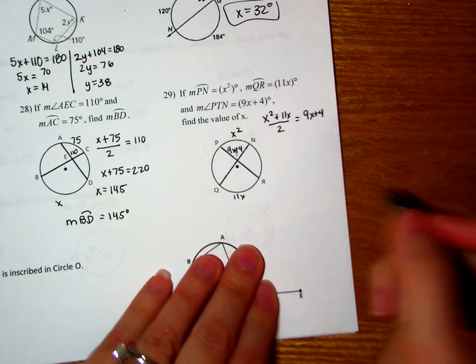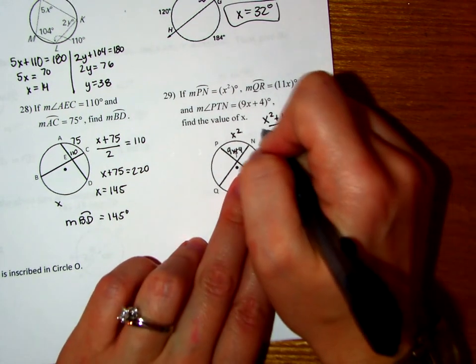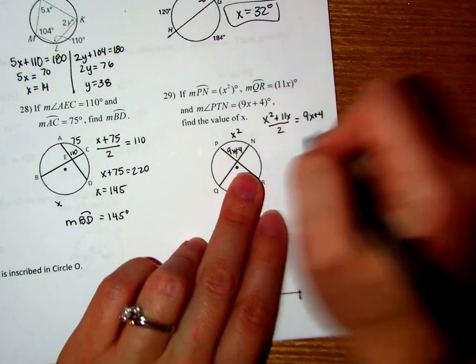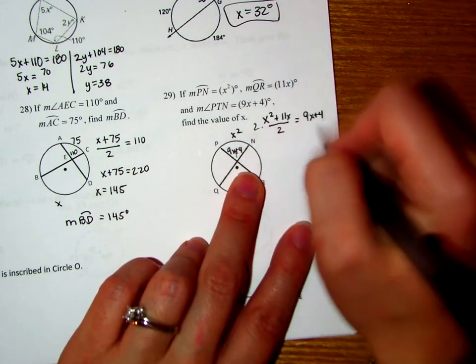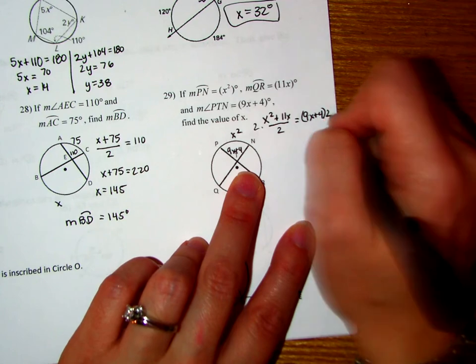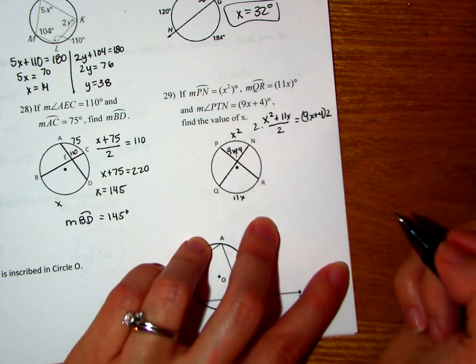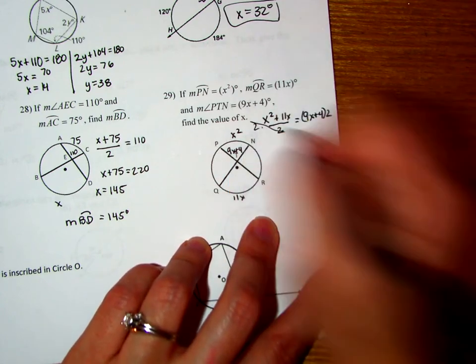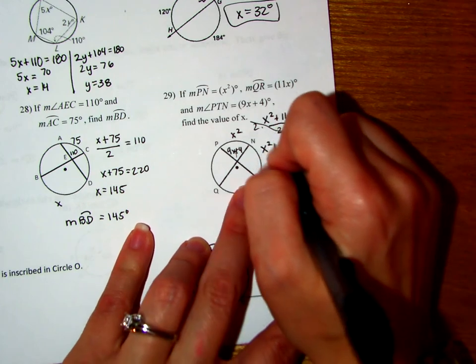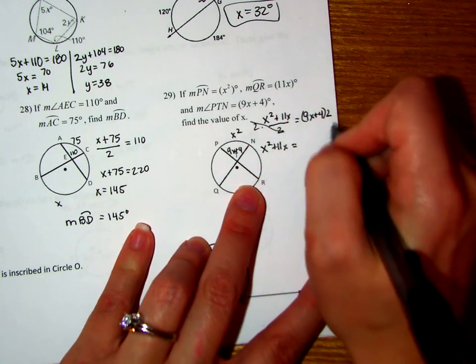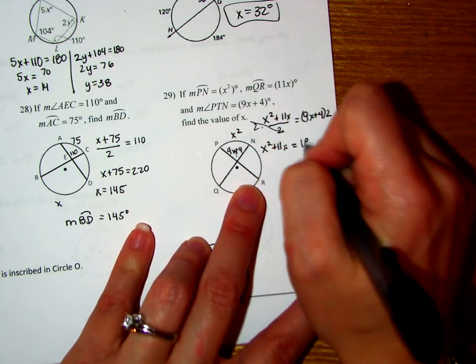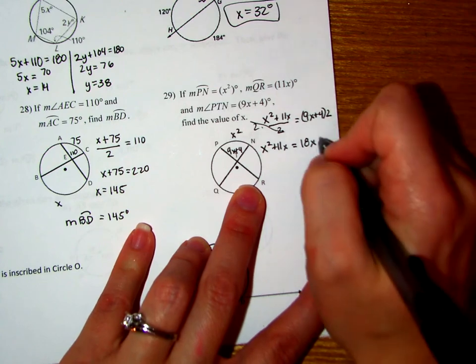And the first thing we're going to do is multiply both sides by 2. When I multiply this side by 2, they're going to cancel. And then we're going to multiply this whole side here, remember to use our distributive property, by 2. These cancel. And I'm left with X squared plus 11X equals, let's distribute, 9X times 2 is 18X, and then 4 times 2 would be 8.